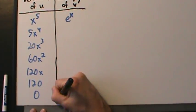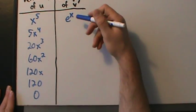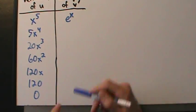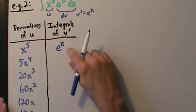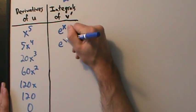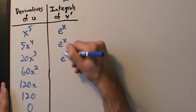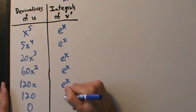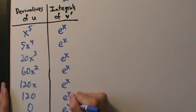Let's extend the table. Now we just keep taking integrals in the right column until we get to the zero row. Luckily this is just eˣ, so when we integrate eˣ we get eˣ. Integrated again, eˣ. eˣ, eˣ, eˣ, and eˣ.